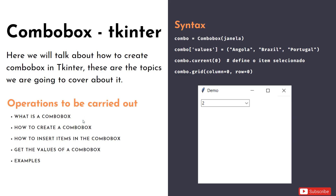You now know what a combo box is, how to create one, how to add values to it, how to set a default value, and how to get and display the selected value. In the next video I'll be back with one more interesting Tkinter basic. If you liked the video, hit the like button and subscribe so you never miss an update!